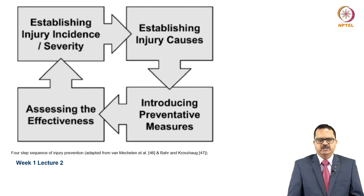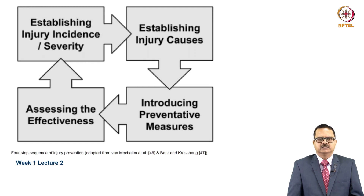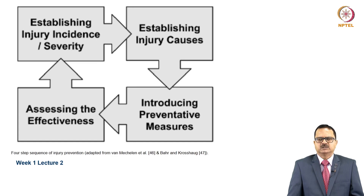To recapitulate, this is the four-step sequence of injury prevention: first, establishing the incidence and severity of the injury; second, establishing the causes of the injury; third, introducing preventive measures; and fourth, assessing the effectiveness — then going back to step one in a cyclical manner.